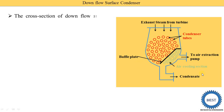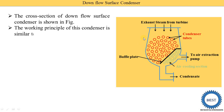In this diagram you see the cross section of the downflow surface condenser. The working principle is similar to the double pass surface condenser — water passes two times for the full length of the condenser. It is a surface condenser, meaning between the steam and the water there are some mediums, and these mediums are the tubes.